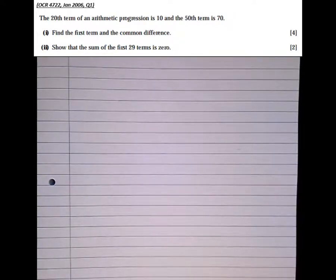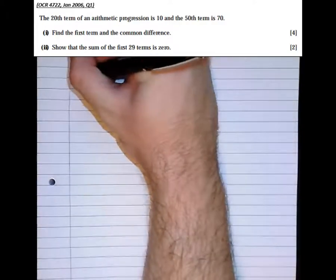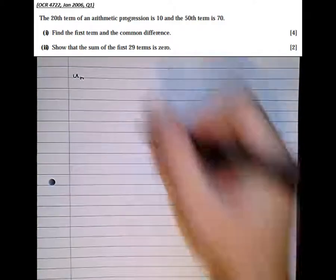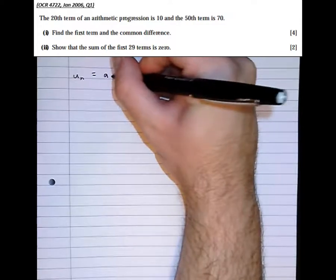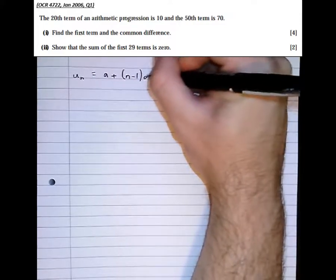So the formula sheet gives us the formula that we're going to need for this. The first one is that the nth term of any sequence is a plus (n minus 1)d.